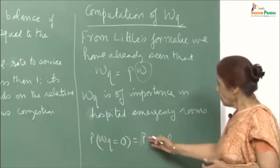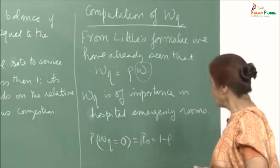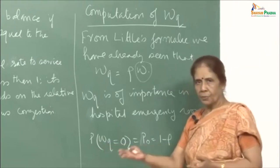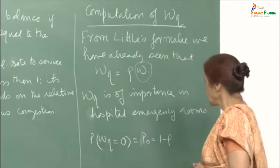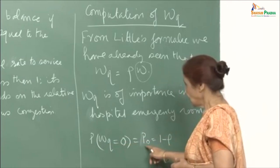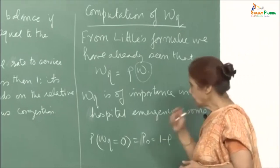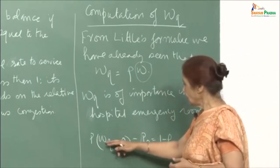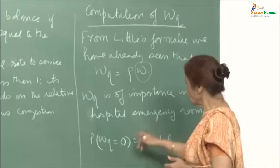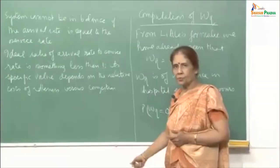We want to look at w-queue in greater detail and obtain its distribution. If there is nobody in the system when an arrival comes for emergency treatment, the waiting time will be 0 — the patient is immediately taken to a doctor. So the probability that w-queue equals 0 is p₀, which equals 1 − ρ. We will compute the distribution for the case when a person coming to the system has to wait, meaning there is one or more person already in the emergency room.